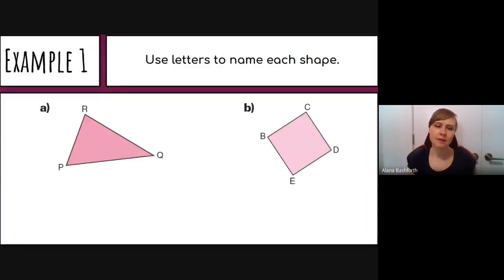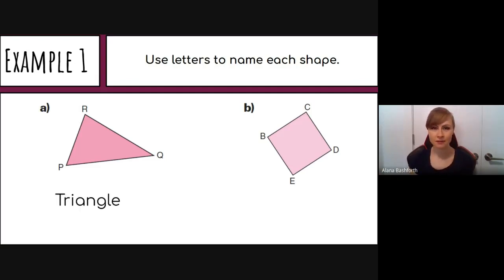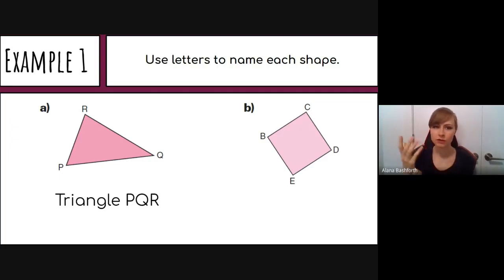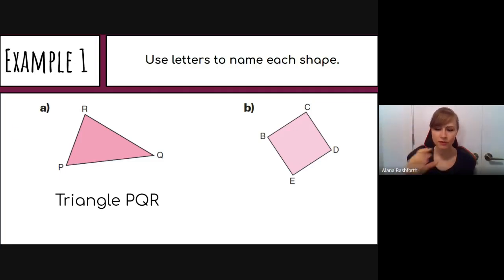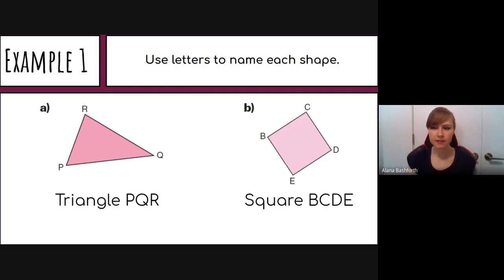For Example 1, we name each shape using letters. The first shape has three sides, so it is a triangle. Starting at vertex P and tracing to Q then R gives us triangle PQR. The second shape, if you tilted it, would be a square. Starting at vertex B and going through C, D, E gives us square BCDE.